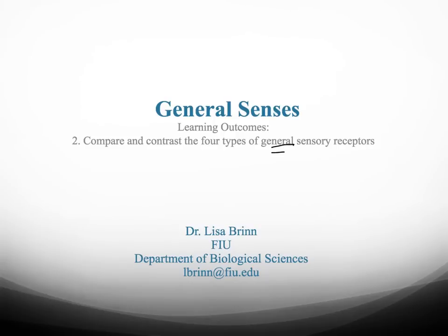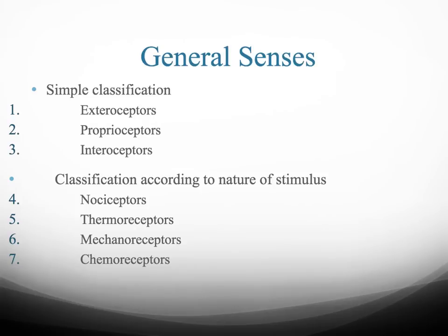Now we're going to be talking about general senses. We can classify them into two categories. The first is a simple classification where we have exteroceptors, proprioceptors, and interoceptors. We talked about these types of receptors in our first lecture about neural tissue. Exteroceptors provide information from the external environment, proprioceptors provide information about position of the body, and interoceptors provide information from inside of the body.